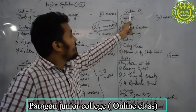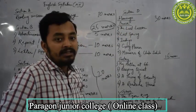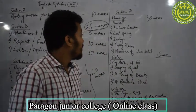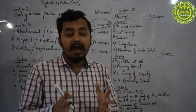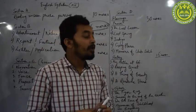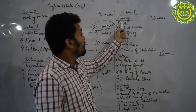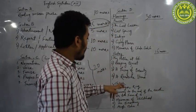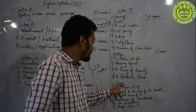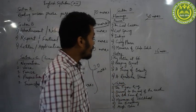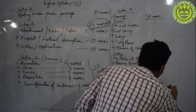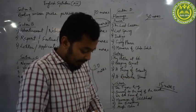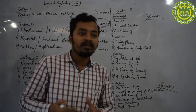Next comes Section D, which in total consists of 30 plus 15, meaning 45 marks. Section D is the prescribed text part. There are two texts prescribed for you. The main textbook is Flamingo, from which you are getting 30 marks. There is a supplementary book — the name of the book is Vistas — and from that supplementary book you have 15 marks.